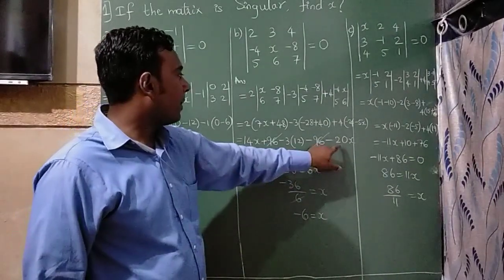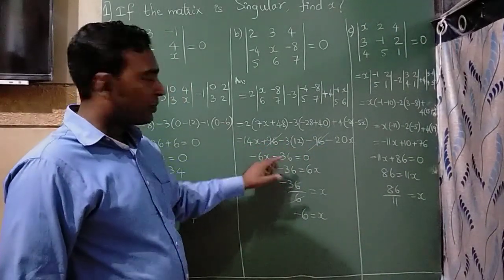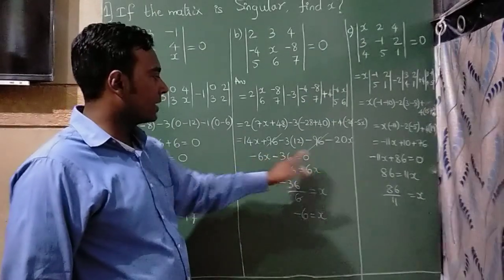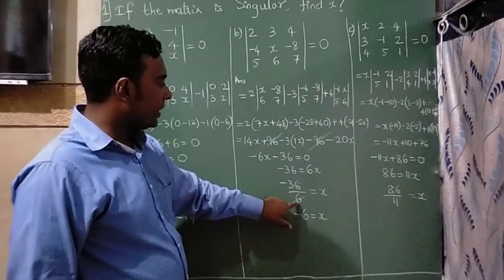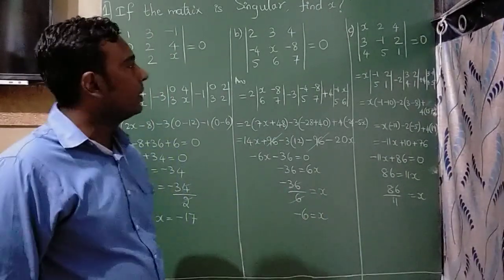14 minus 20 is minus 6. 3 times 12s are 36. I have taken this minus 6x on the right hand side, it will become plus. This 6 will come in denominator. If you divide this, you will get a minus 6 as an answer.